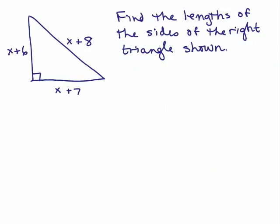So here's a problem, let's say you have a right triangle, you can see I have sides x plus 6 and x plus 7, those are the legs and I have a hypotenuse of x plus 8 and it says find the lengths of the sides of the right triangle shown. So it wants to know all three sides.